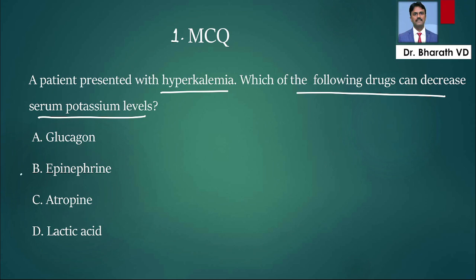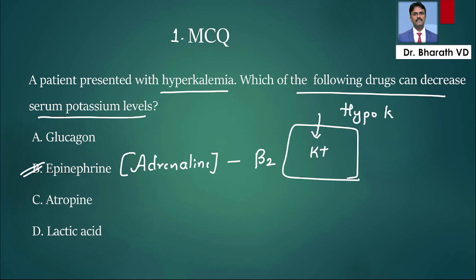If you're telling epinephrine, then you are right. Epinephrine is also called adrenaline. Remember, adrenaline acts on the receptor called beta-2, and when you activate beta-2, the receptor will push potassium into the cell. So if they push potassium into the cell, the patient will have hypokalemia. The drug which can decrease potassium in the blood is epinephrine or adrenaline.